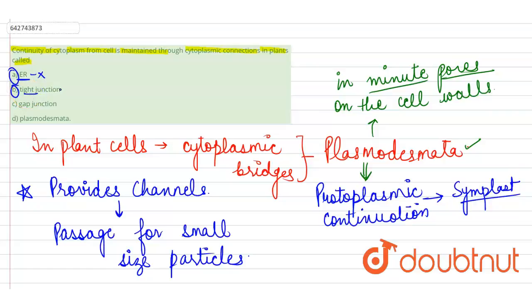B is tight junction. Tight junctions are present in between the cells of different tissues. This is also incorrect.